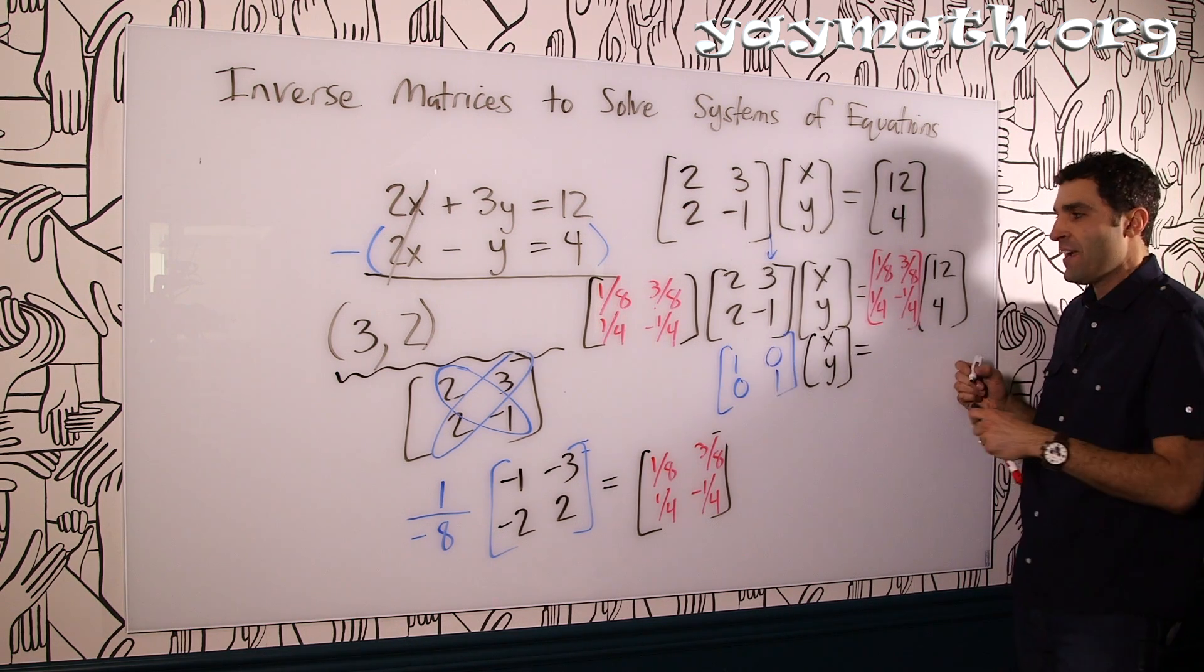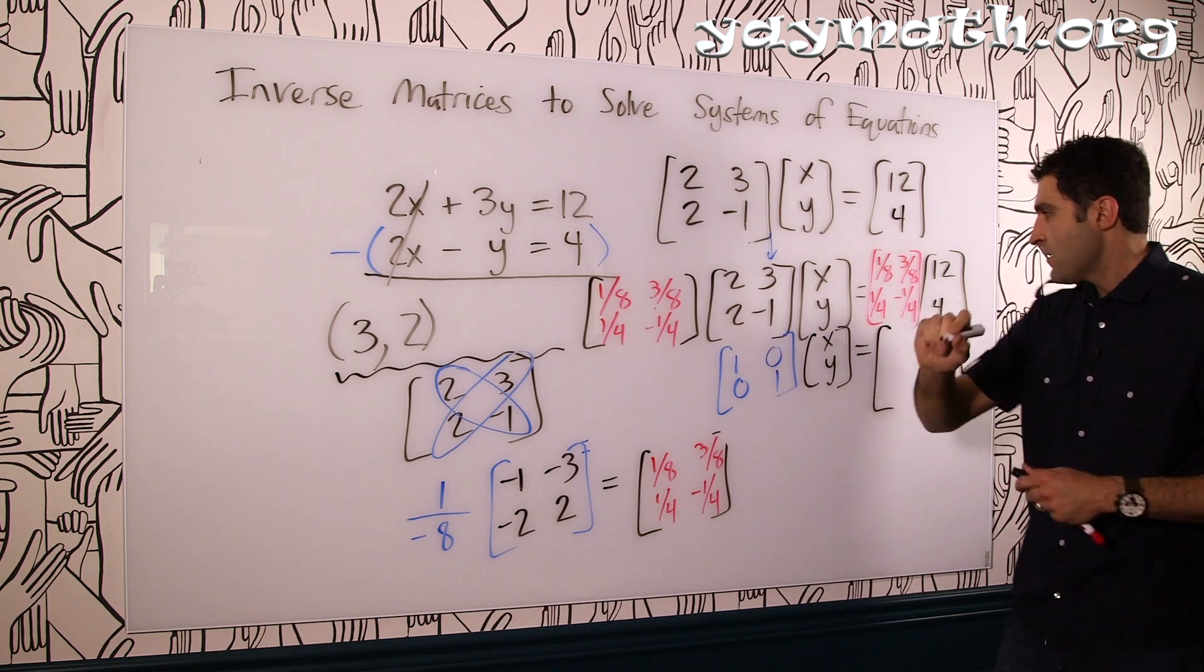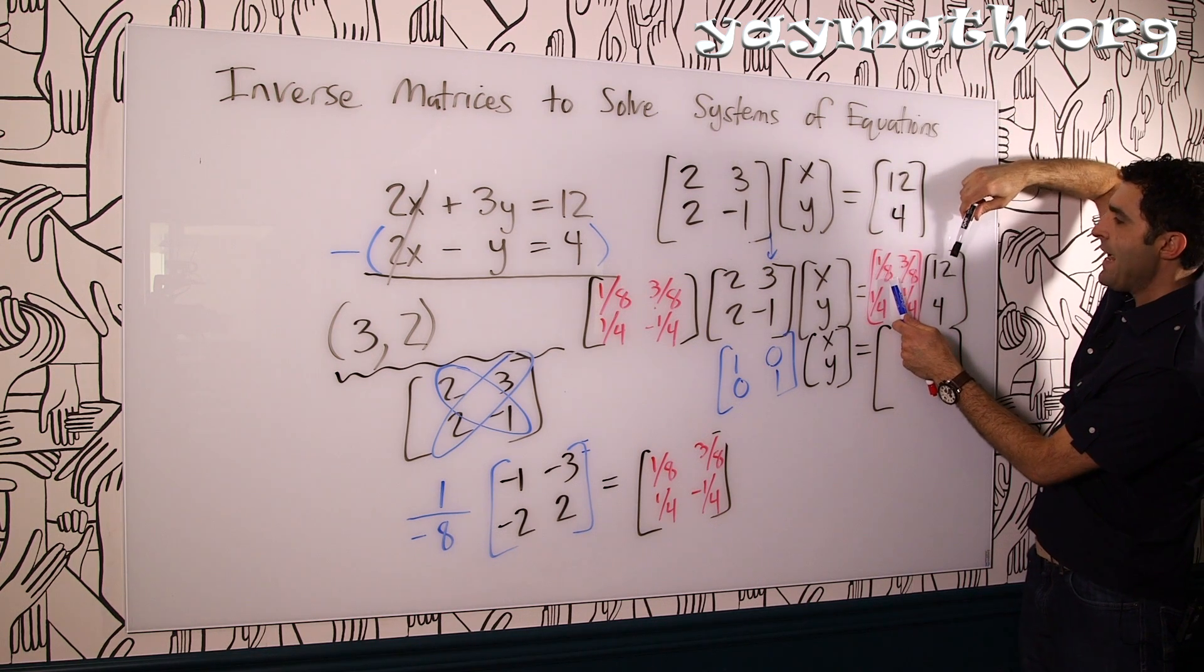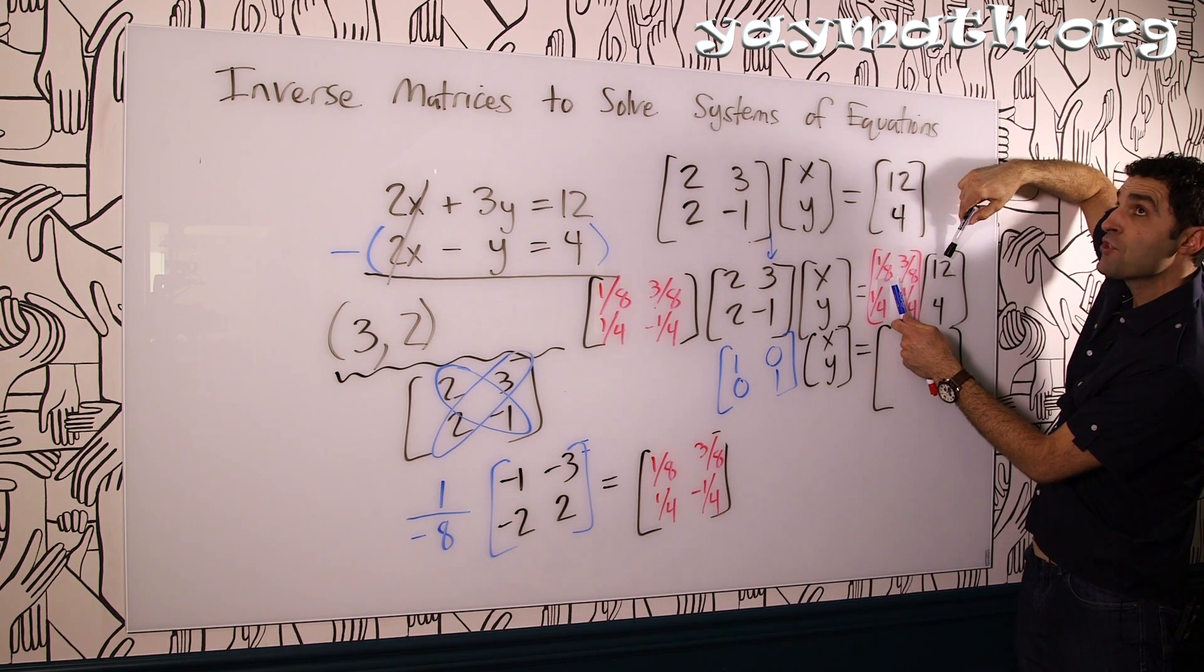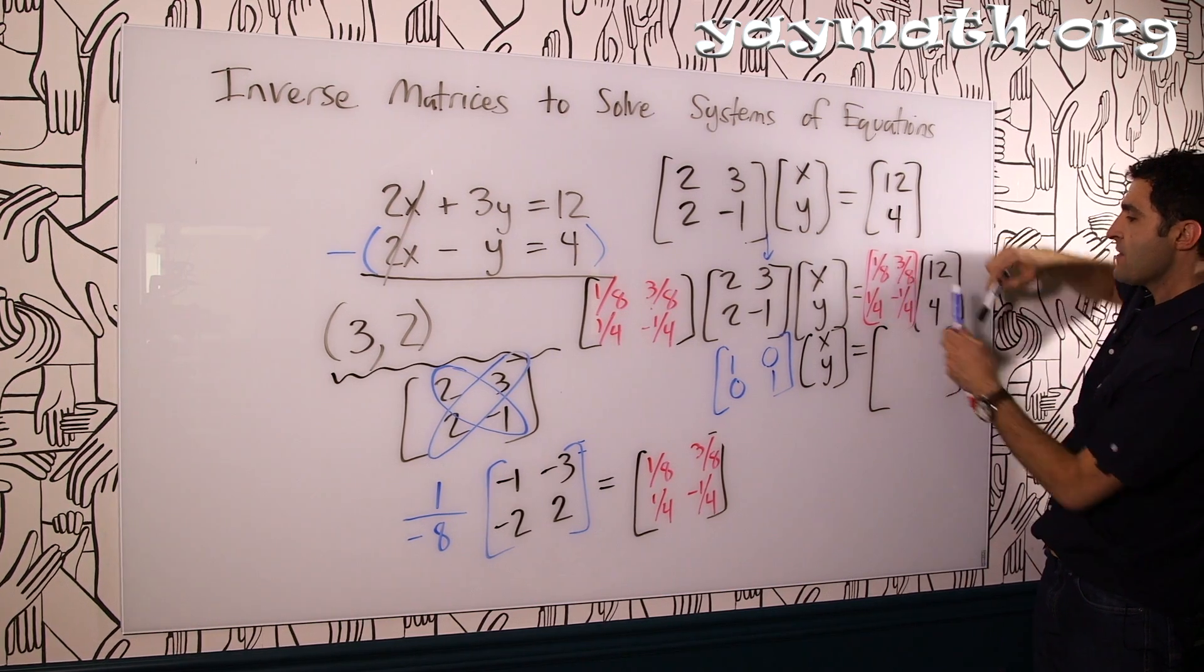So we have xy equals, and now the result of this 2 by 2 times a 2 by 1 will be the answers for x and y, which is pretty amazing. Let's make sure we get this right, and we go a little bigger here. All right, here we go. Rows by columns, every time. 1/8 times 12 is 12 over 8, which is 3 over 2.